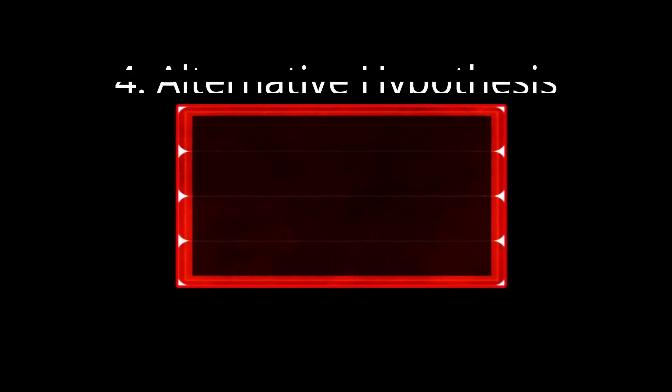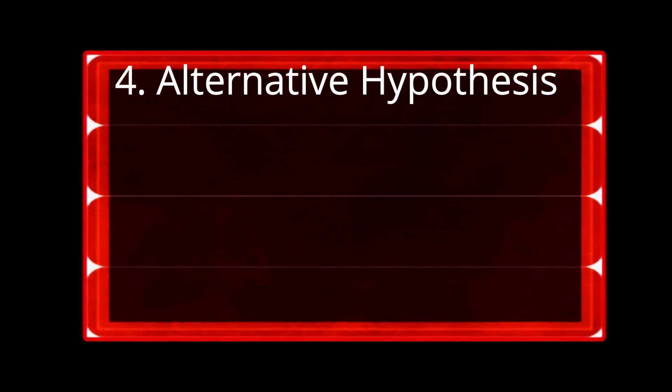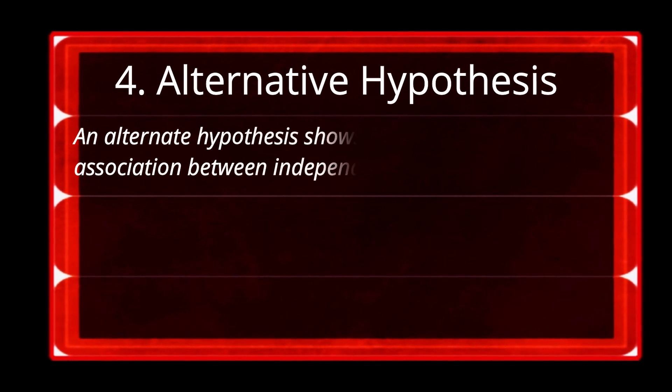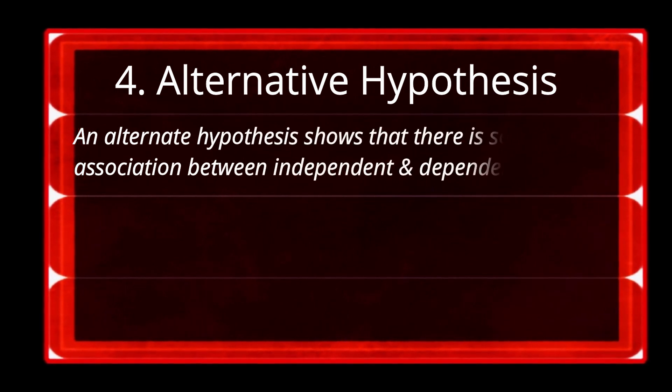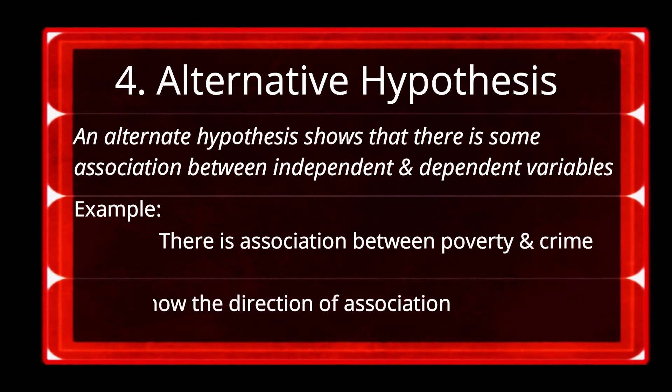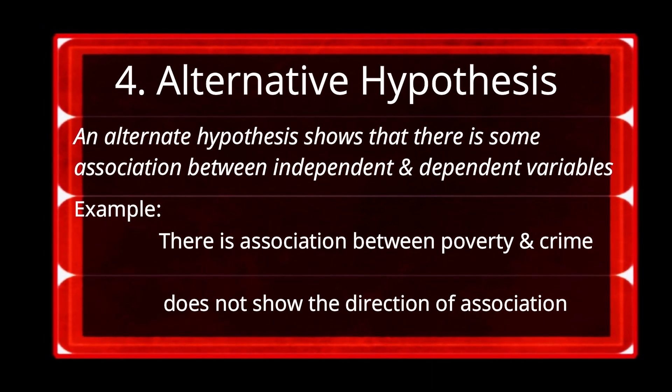Alternate hypothesis. Contrary to null hypothesis, an alternate hypothesis shows that there is some association between independent and dependent variable. For example, if we say there is an association between poverty and crime, this is the example of an alternate hypothesis. However, the alternate hypothesis does not show the direction of association.